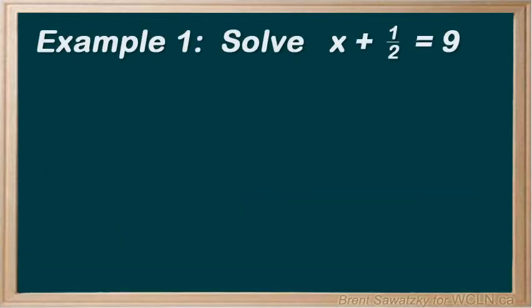Example 1. Solve x plus 1 half equals 9. Again, the goal to get x by itself, isolated. We have the 1 half to deal with.